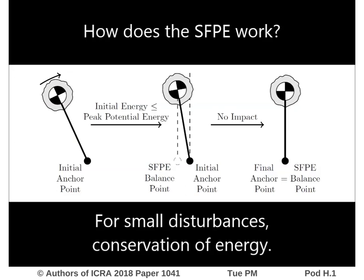After choosing an initial anchor point, if the initial energy of the model is less than its peak potential energy, conservation of energy is used to predict where the center of mass will come to rest. The ground projection of this predicted center of mass location is then chosen as the SFPE balance point and used as the assumed final anchor point.